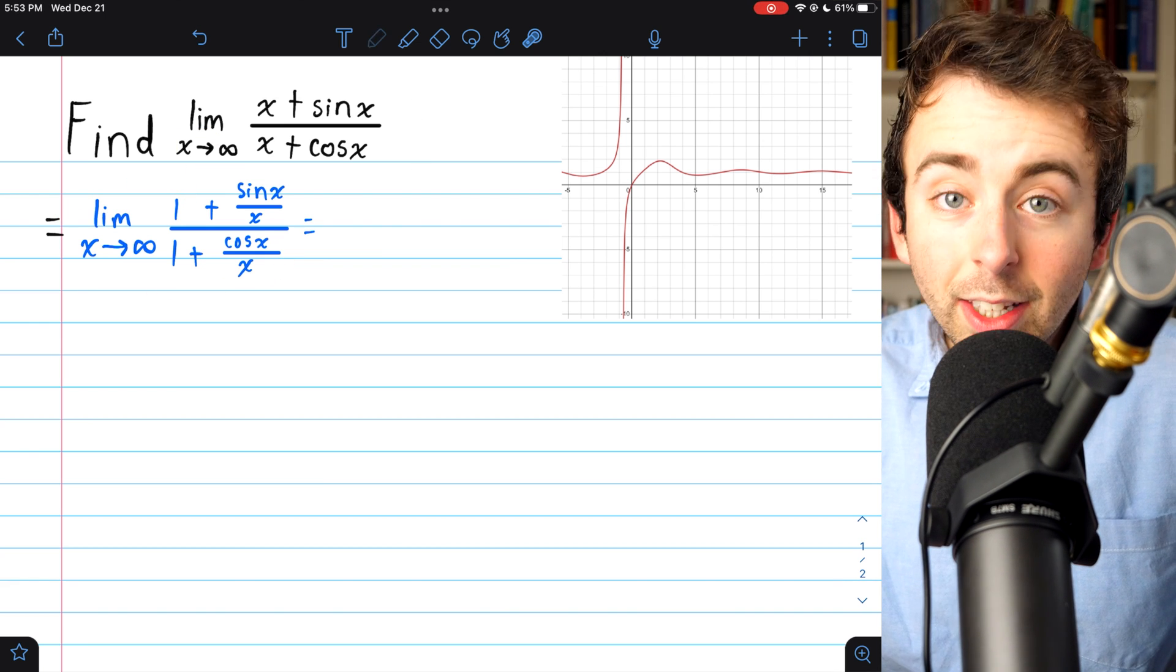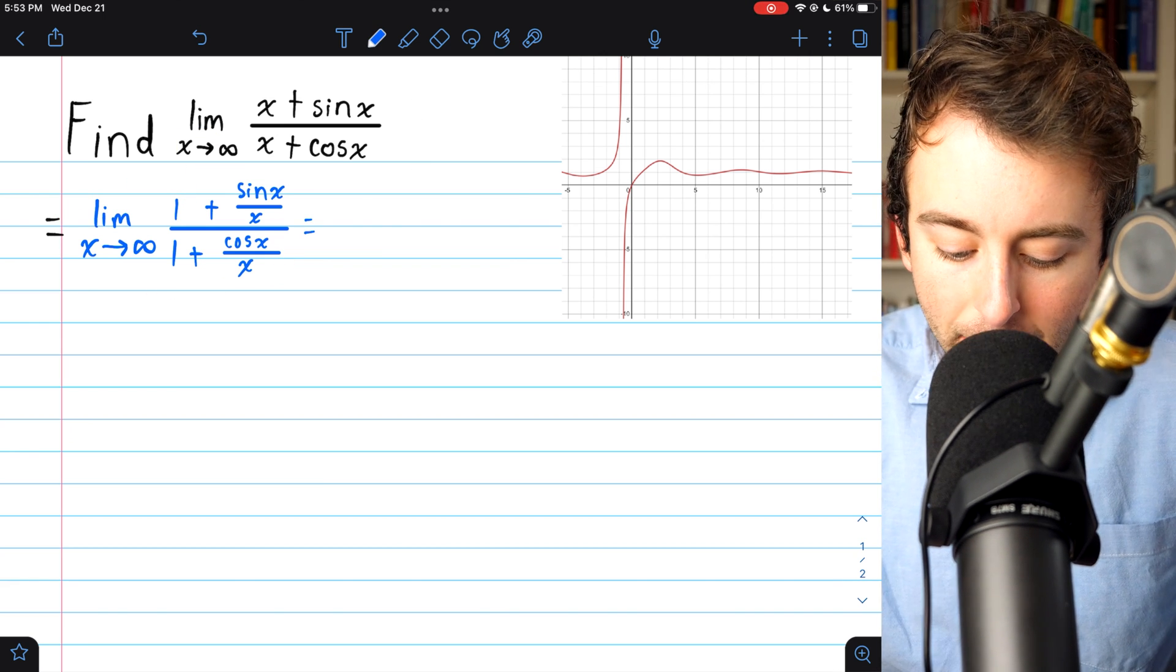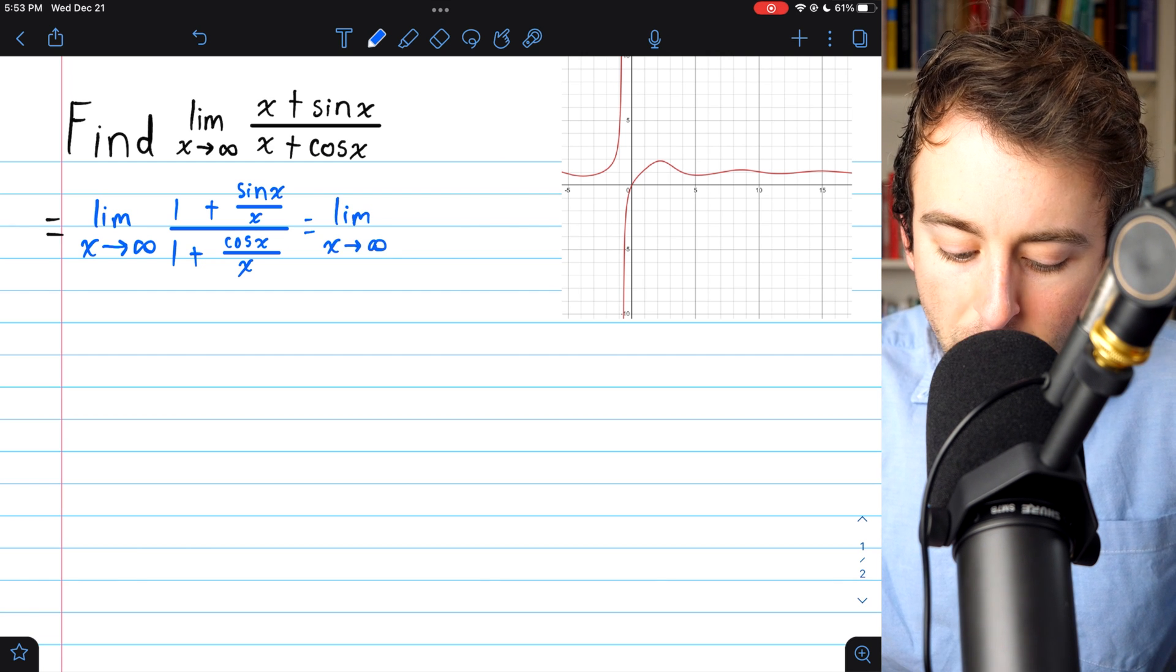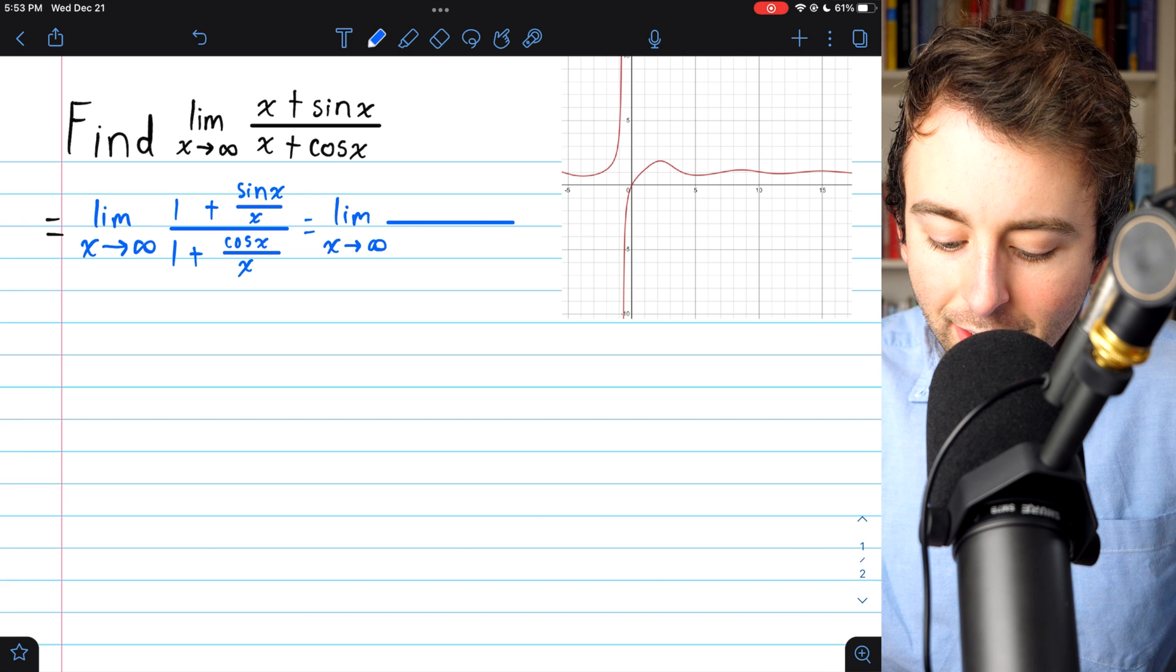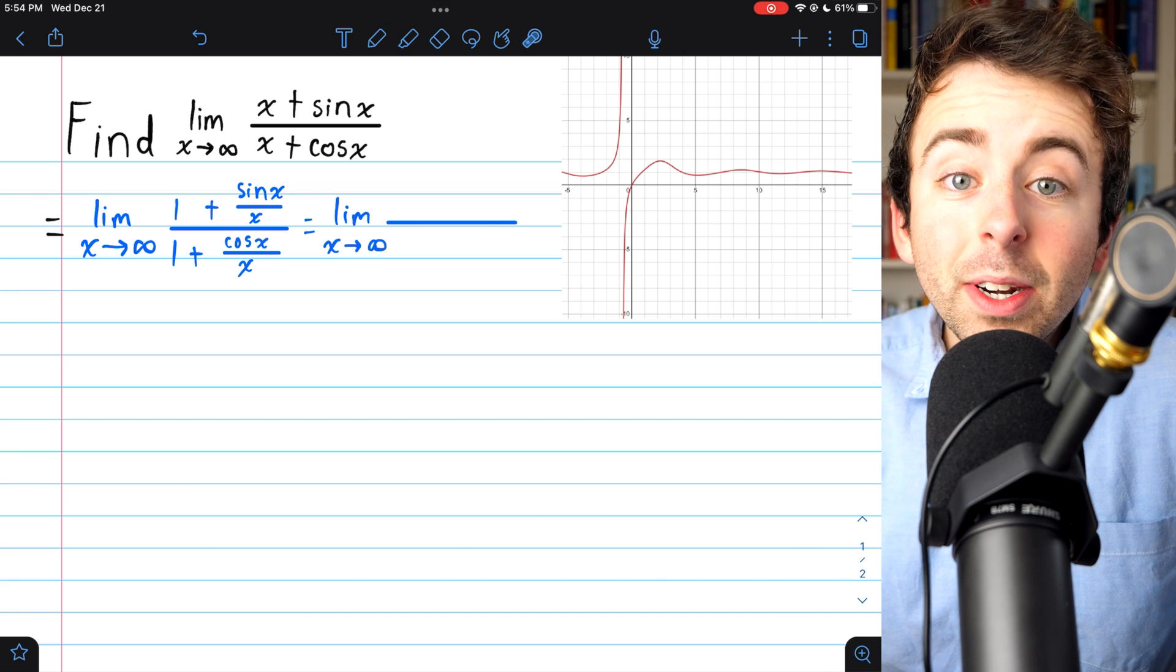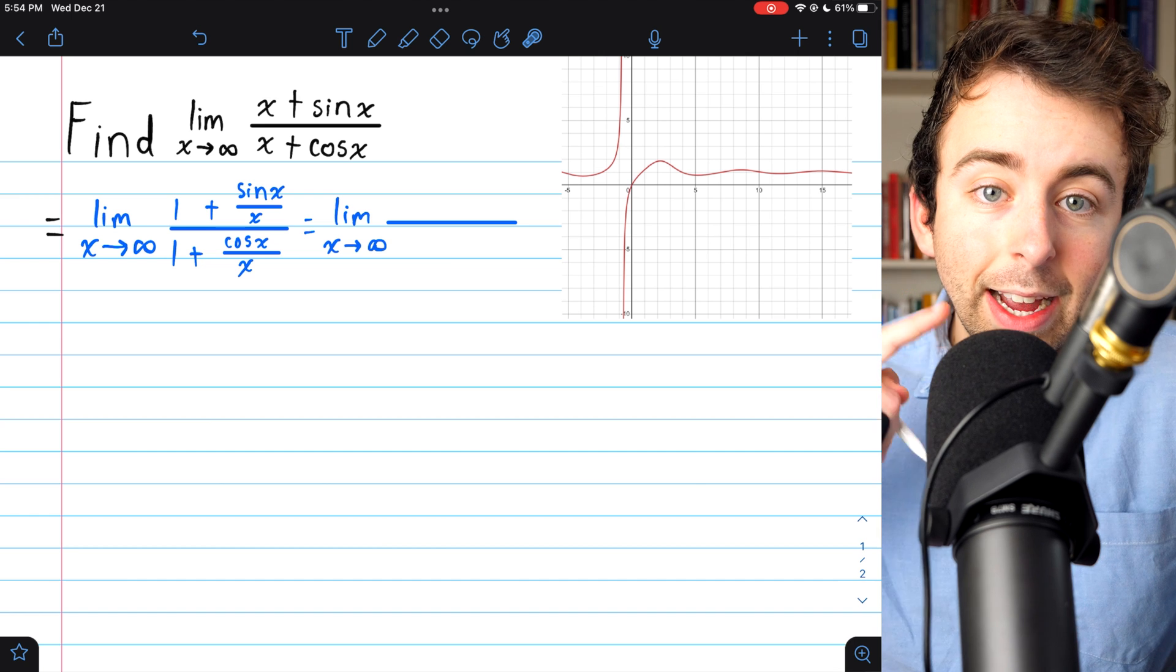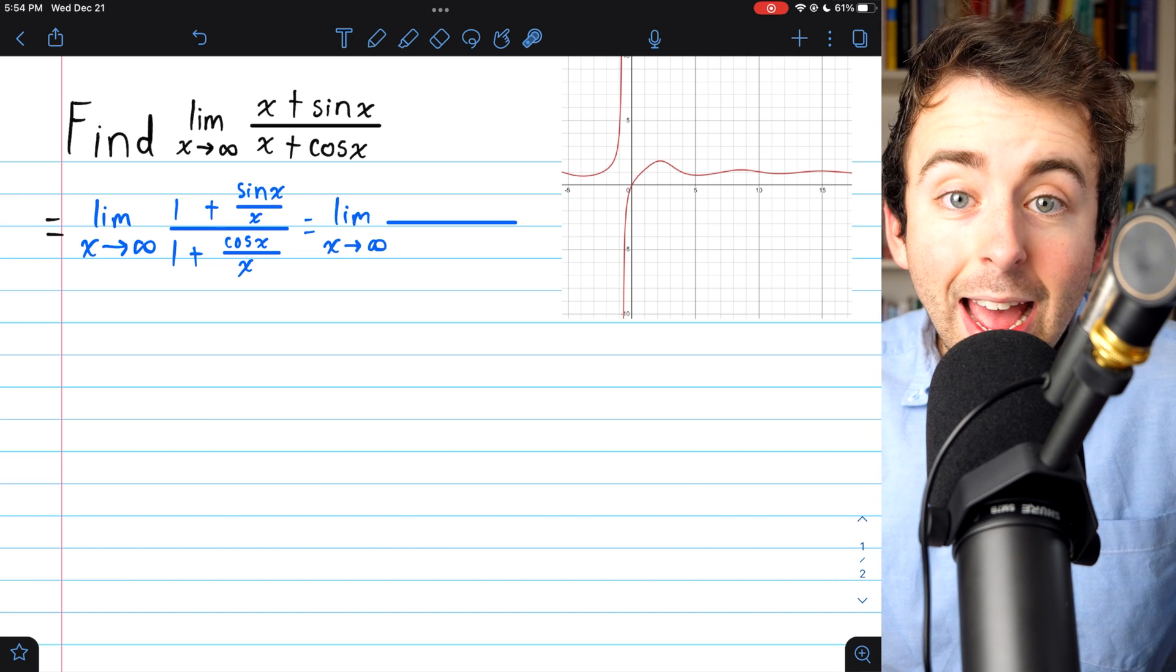And at this stage, the limit is very easy to evaluate. This is the limit as x goes to infinity. And in the numerator, we have 1 plus sine x over x. But as x goes to infinity, sine x just fluctuates between negative 1 and positive 1. And we're dividing by x, which is getting arbitrarily large.